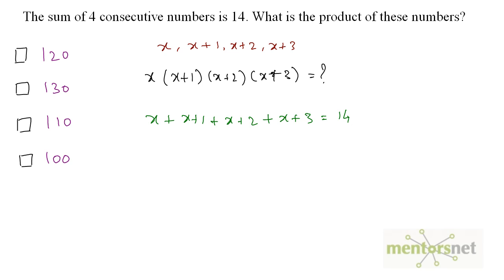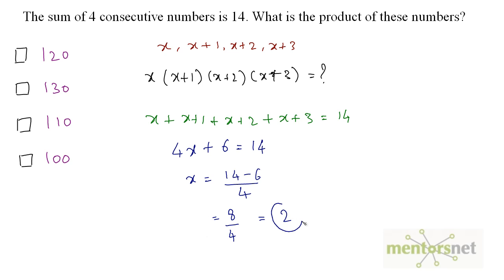Solving for x: 4x + 1 + 2 + 3 = 14, so 4x + 6 = 14, giving x = (14 − 6) / 4 = 8 / 4 = 2. Now finding the product: 2 × (2+1) × (2+2) × (2+3) = 2 × 3 × 4 × 5. That equals 6 × 20 = 120.